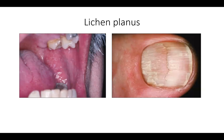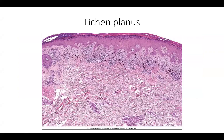Oral involvement often shows linear streaks forming a reticulated pattern — typical of Wickham striae in lichen planus. Nail plate changes can occur as well; the inflammation can affect the nail matrix, causing nail dystrophy.